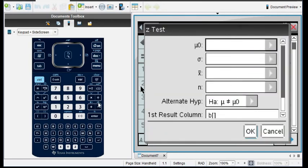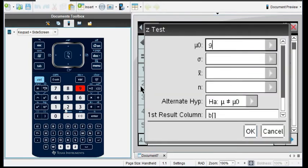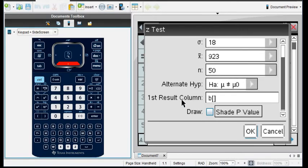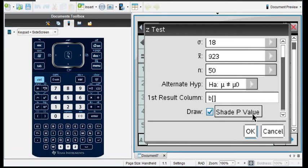And then we're just going to start plugging in our information. Our mu naught was 920. It's going to ask for the population standard deviation next, which was 18. And then our sample mean, which is 923. And n is 50. And our alternative in this case was not equal to, so we're going to leave that the same. This is just where it's going to put the results in column B. And we want to draw it this time where it shades the p-value. We're going to click OK.